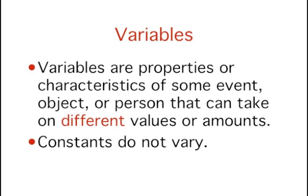Variables are properties or characteristics of some event, object, or person that can take on different values or amounts, as opposed to constants such as the mathematical constant pi, which do not vary.